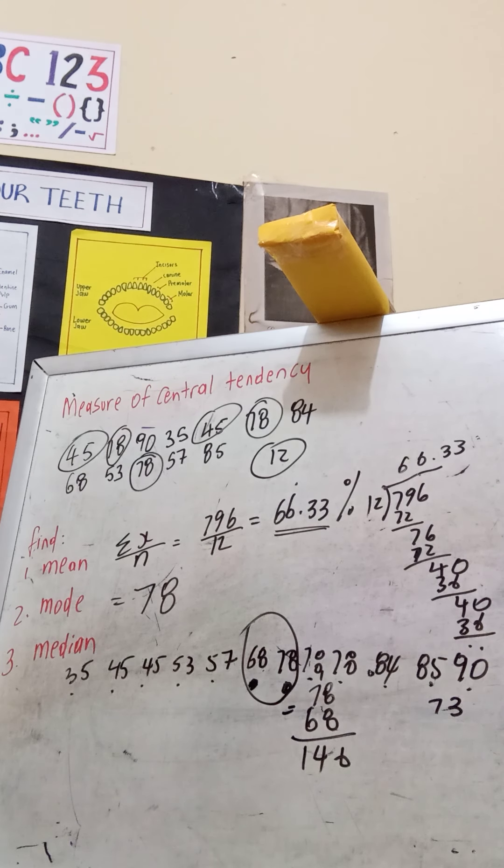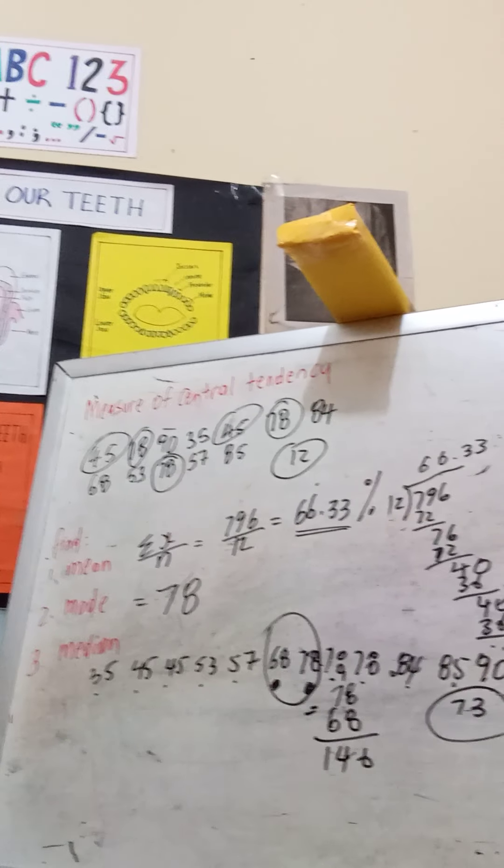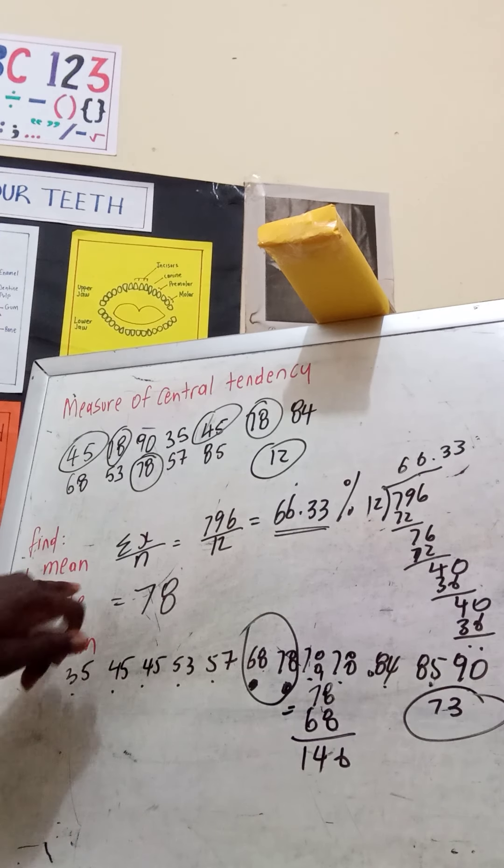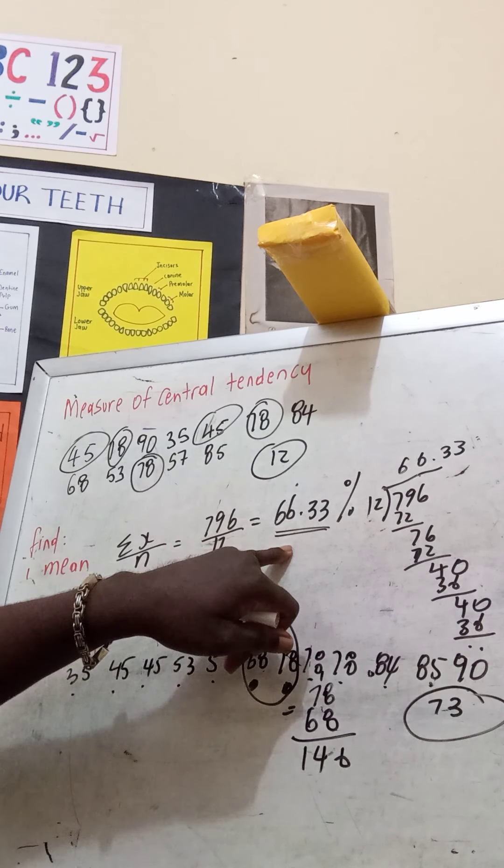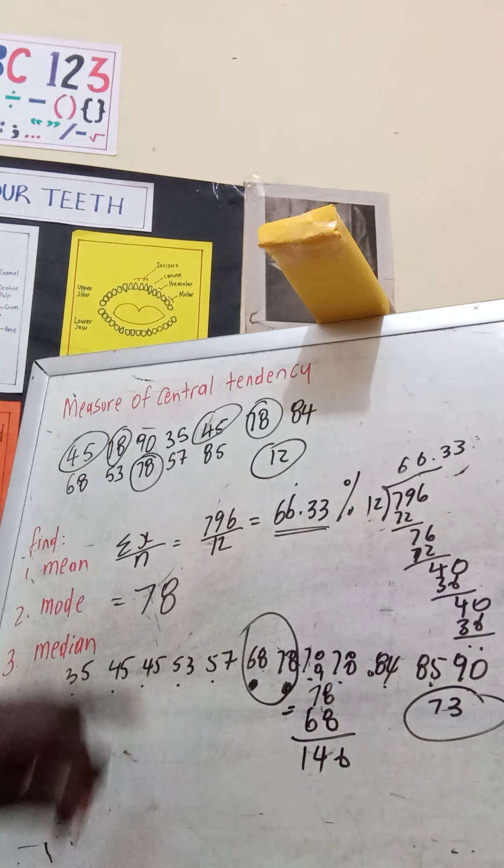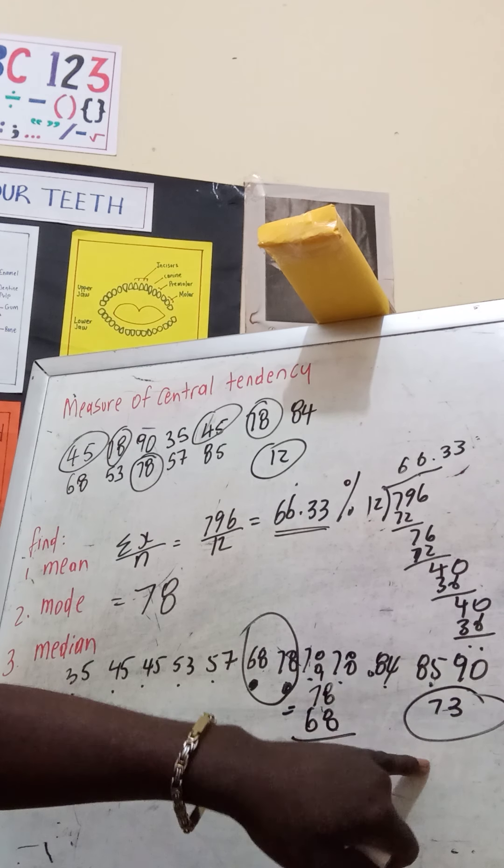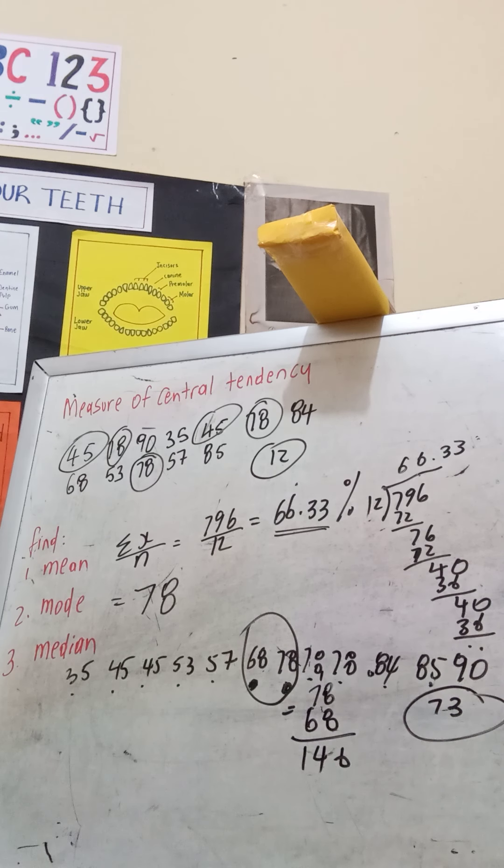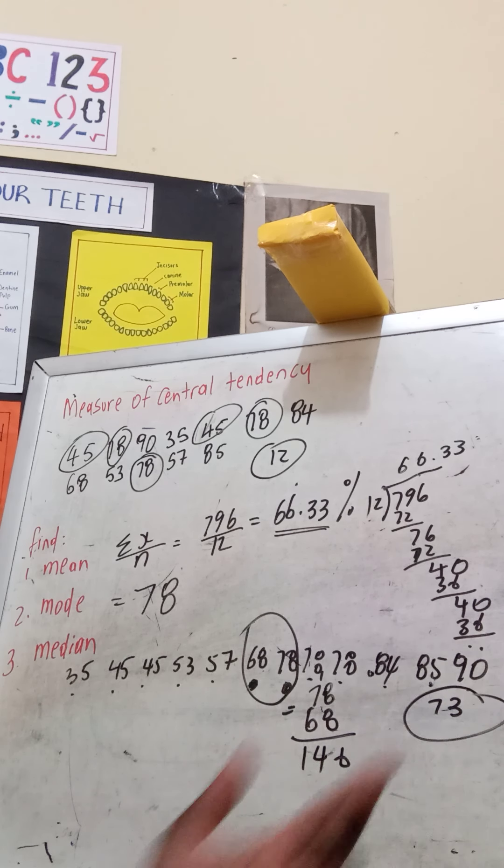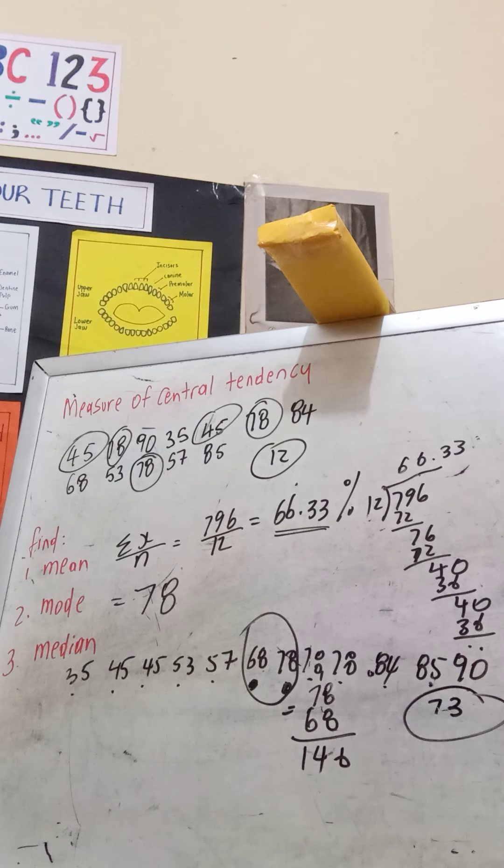If you note carefully, my mean was 66.33 percent, my mode is 78, and my median value is 73. So I could say to myself as a teacher that the median value in the class is 73 percent.